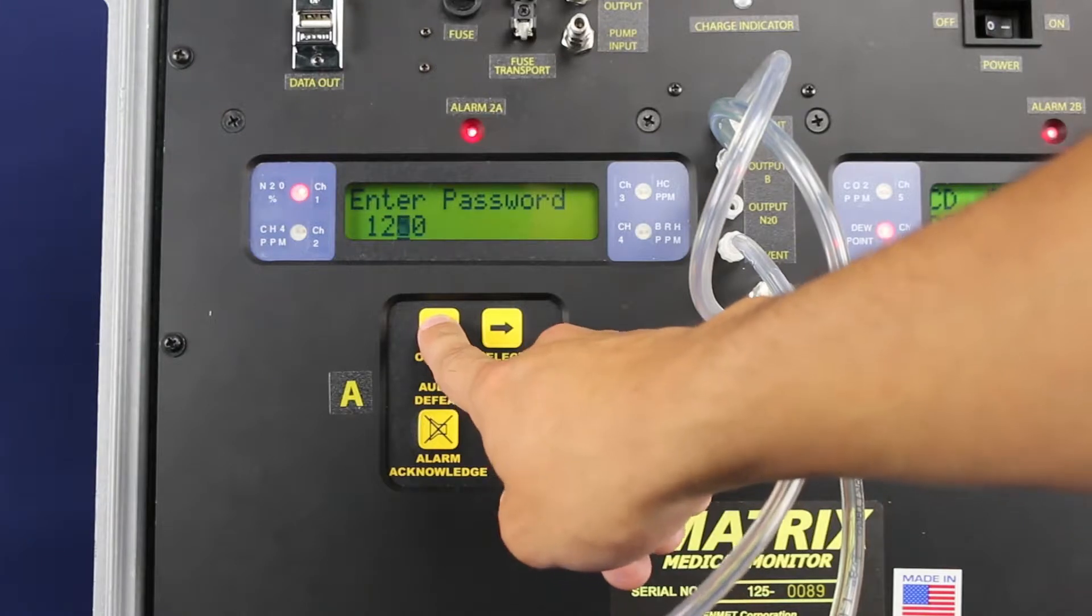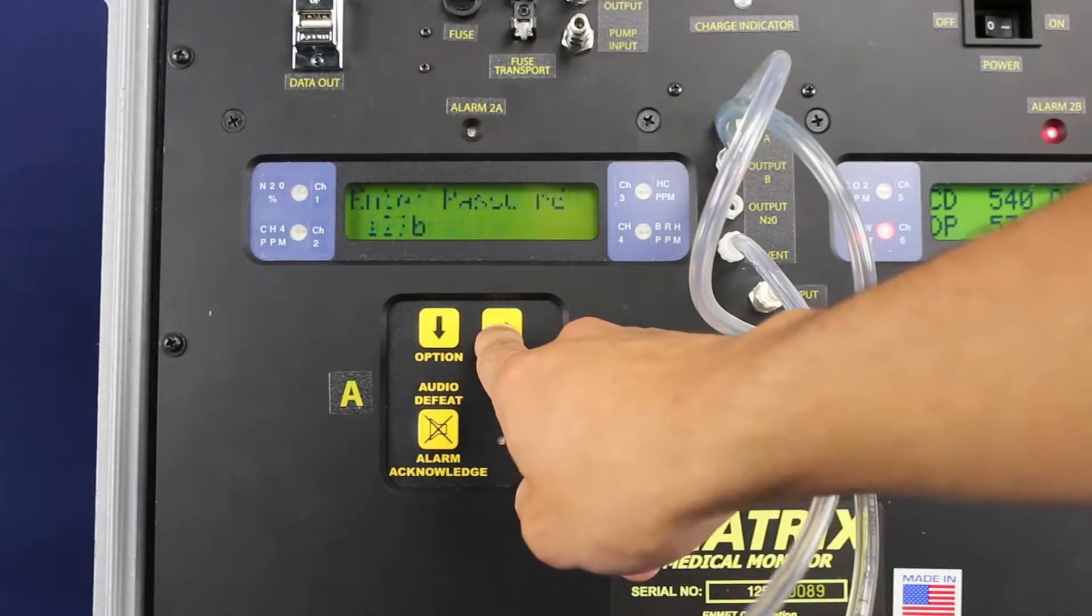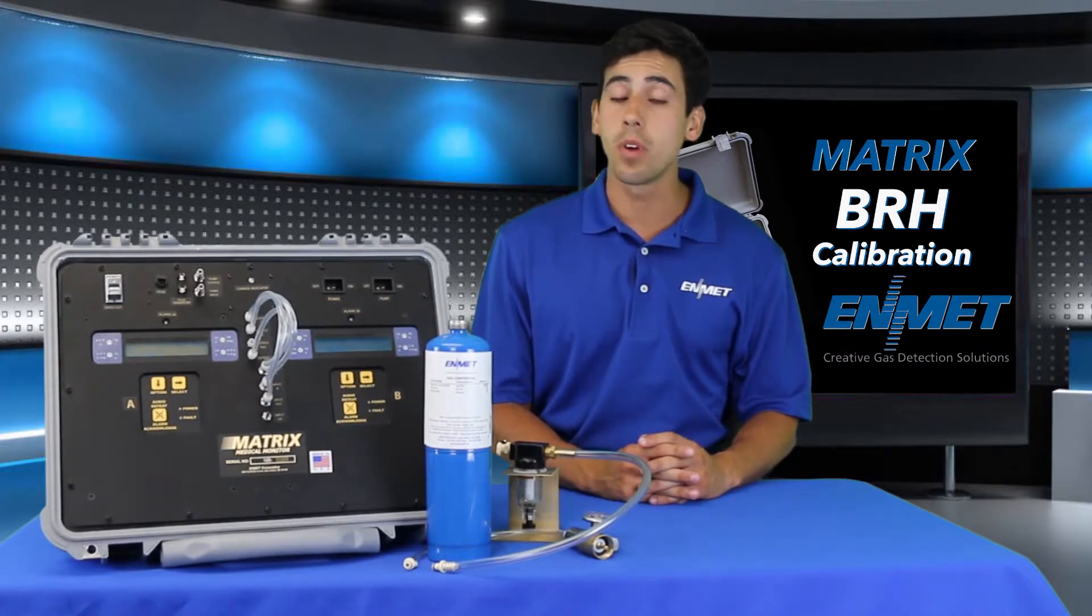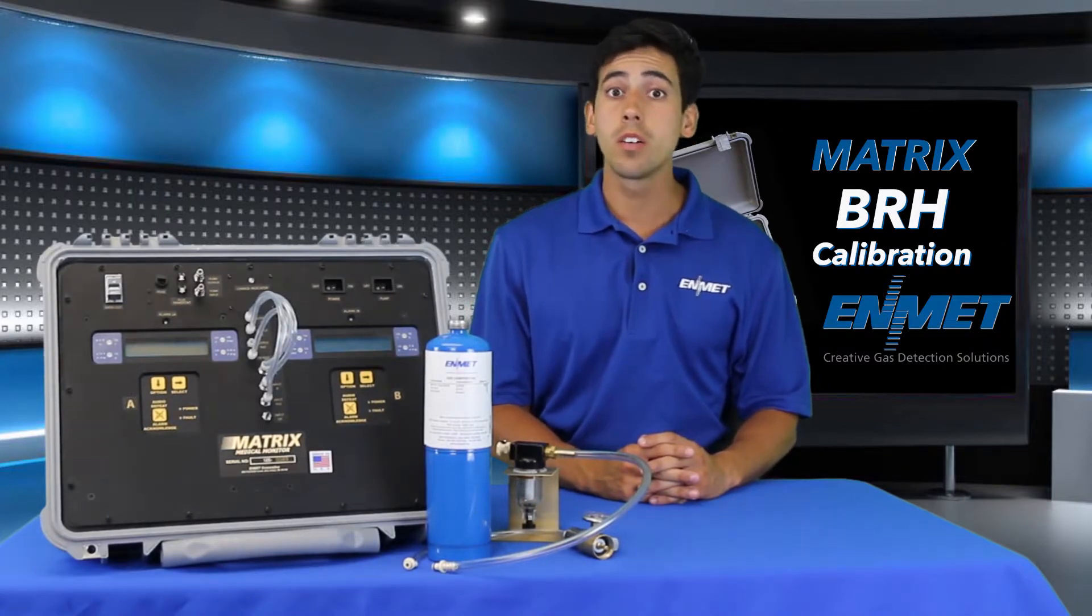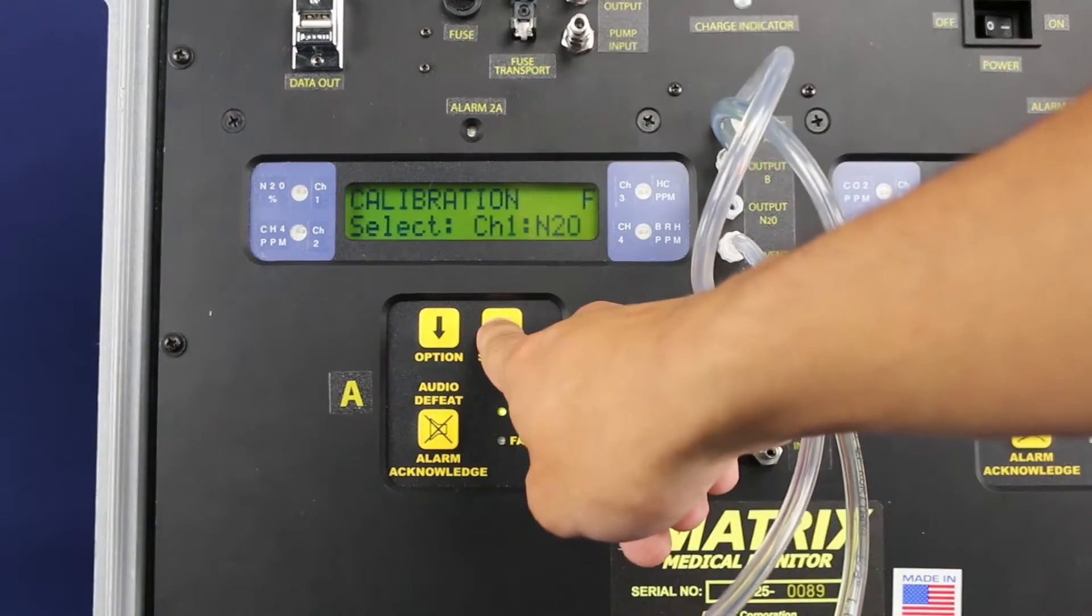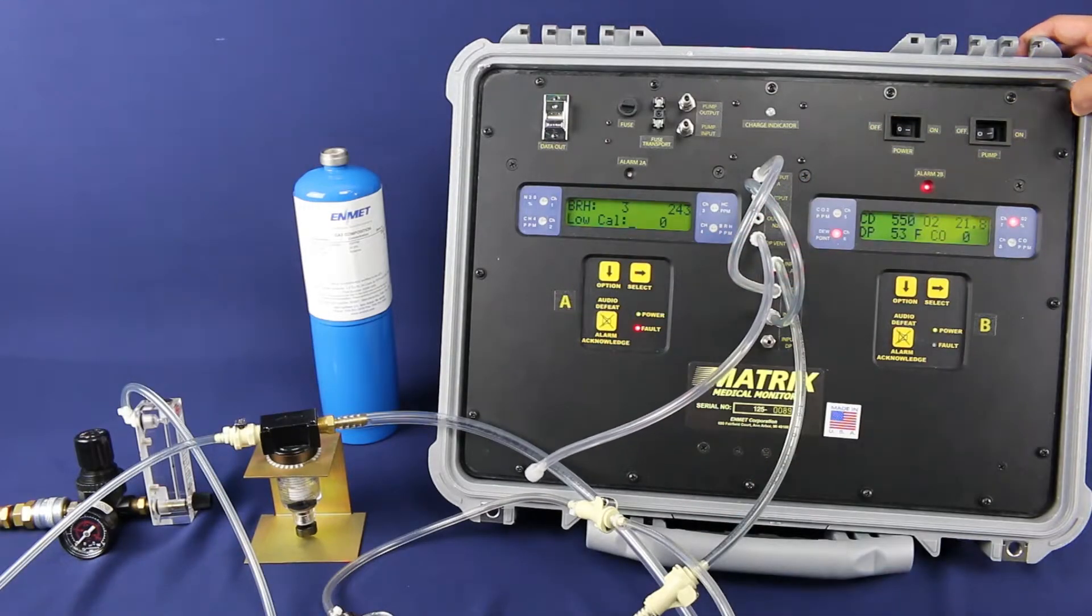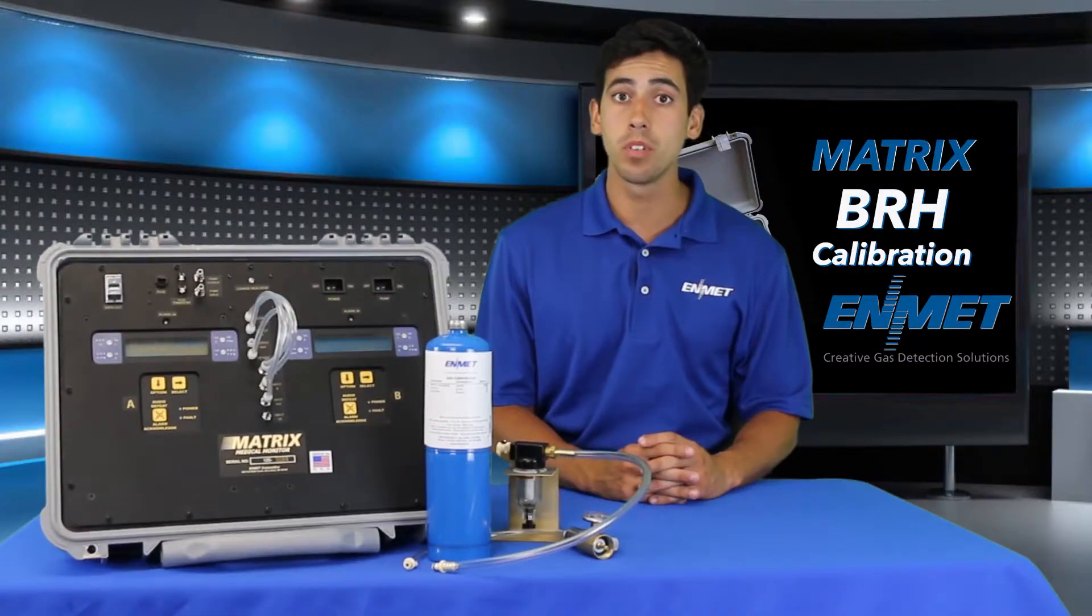Once you have entered the password, the calibration submenu option will be displayed. Press select to enter. Cycle through the channels using the option key until the BRH channel is displayed, then press the select button to enter the calibration procedure. At this point you are in the matrix calibration procedure for the BRH sensor.